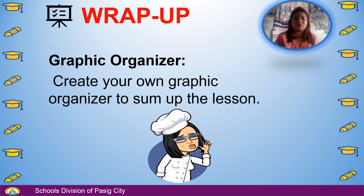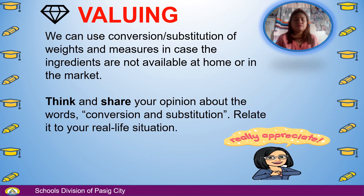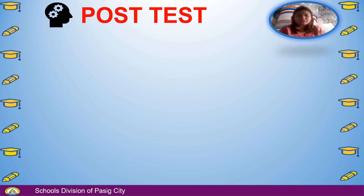After the lesson, let's do a wrap-up. Create your own graphic organizer to sum up the lesson. We can use conversion or substitution of ingredients and measures in case the ingredients are not available at home or in the market. Think and share your opinion about the words conversion and substitution, and relate them to your real-life situation.